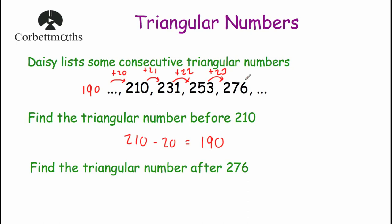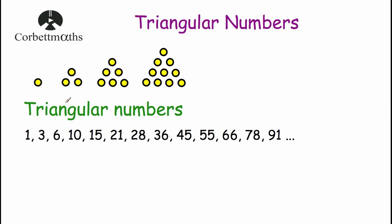Next, we want to find the triangular number after two hundred and seventy-six. We've been adding twenty, twenty-one, twenty-two, twenty-three, so to find the next one we would add twenty-four. So two hundred and seventy-six plus twenty-four: six plus four is ten, put the zero down carry one, seven plus two is nine plus one is ten, put the zero down carry one, two plus one is three. So the next triangular number would be three hundred.